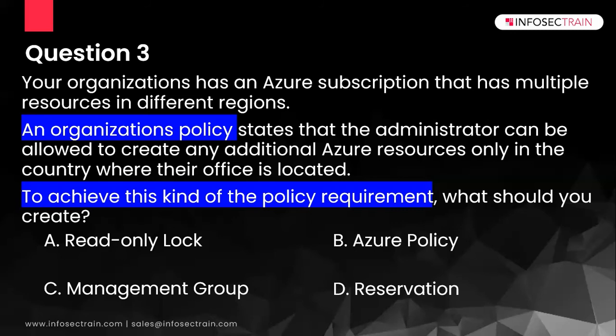Option C, the management group, is also not going to help here, because it is simply a way to manage your subscriptions. You can group multiple subscriptions into a single management group, and this allows you to build an Azure subscription tree used with several other Azure services. So C is not the answer either. Option D is a reservation — making a one-year or three-year deal with Microsoft for reserved instances will help you reduce costs and save money, but it does not help with implementing policies.